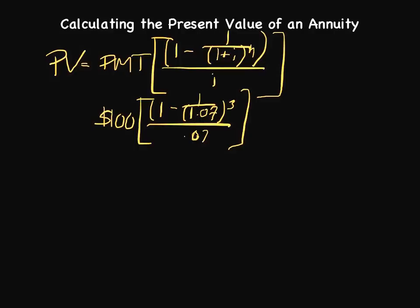1.07 to the third power is actually 1.22543. If we take that number and divide one, which is this number right here, and divide it by the result of 1.07 to the third power, what we would actually get is 0.8162979.